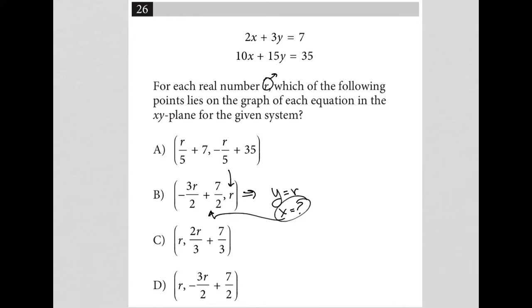So, for choice C, for instance, we have x equals r. We have r in the x position. So, if x equals r, then all we'd be trying to figure out is what is y equal for both of these. And if y equaled what is provided here in the y position of the ordered pair, then that would be the correct answer.